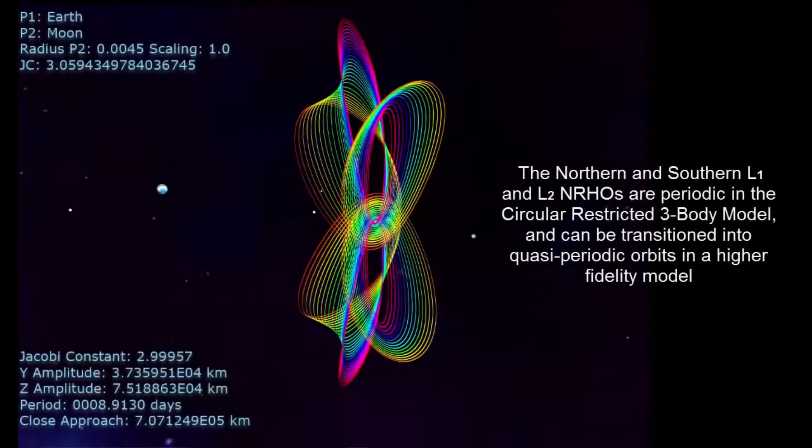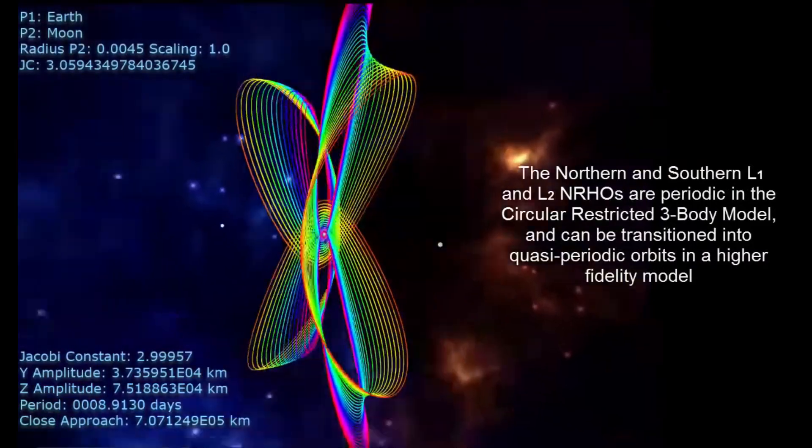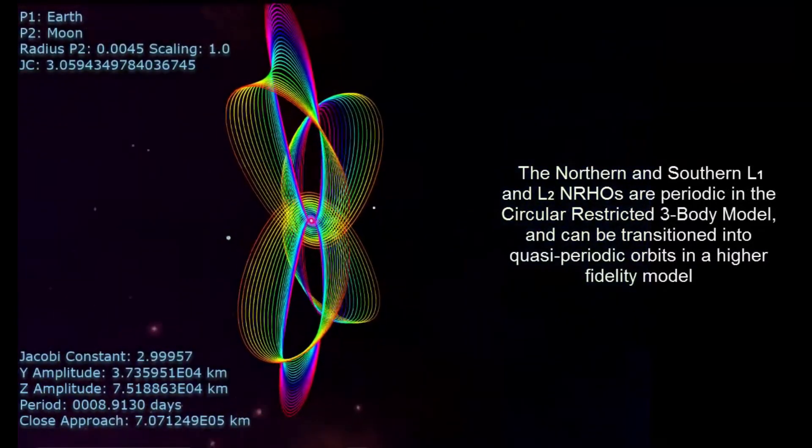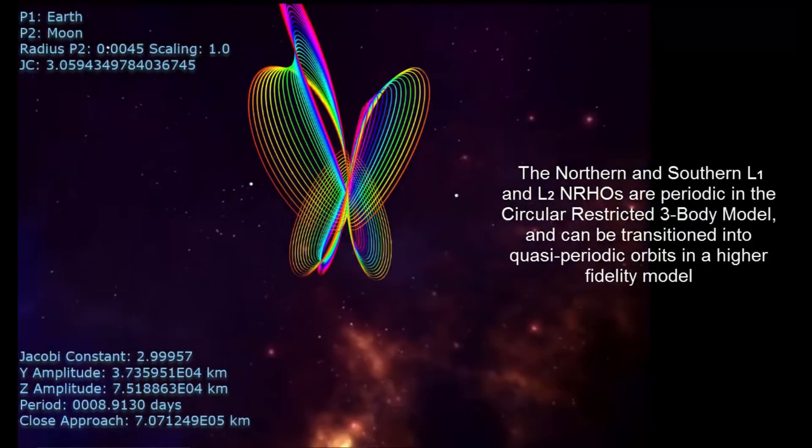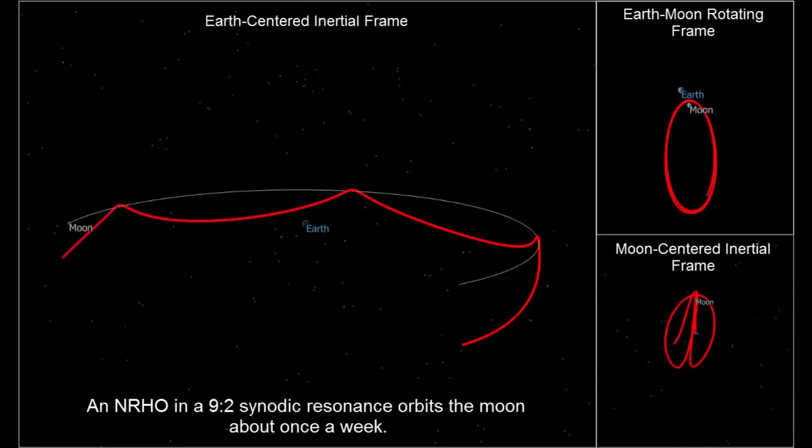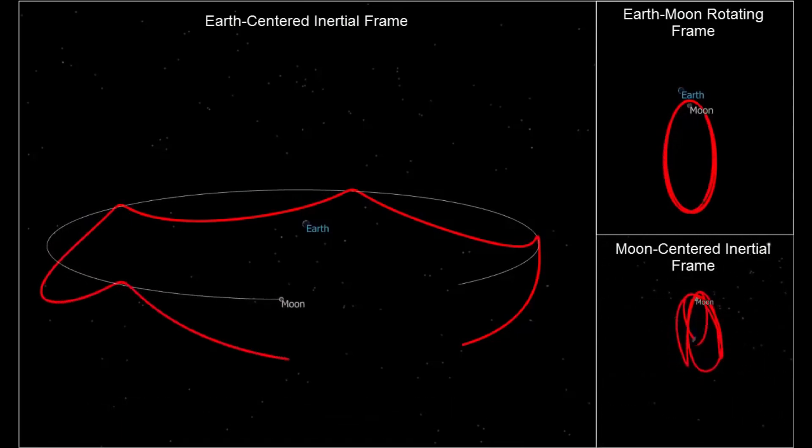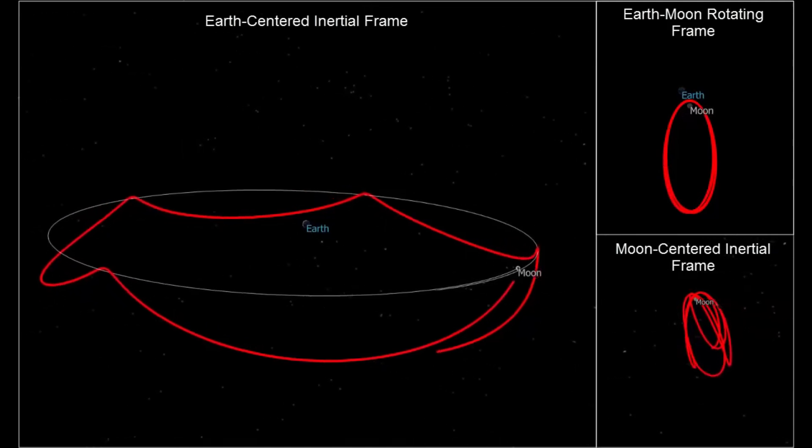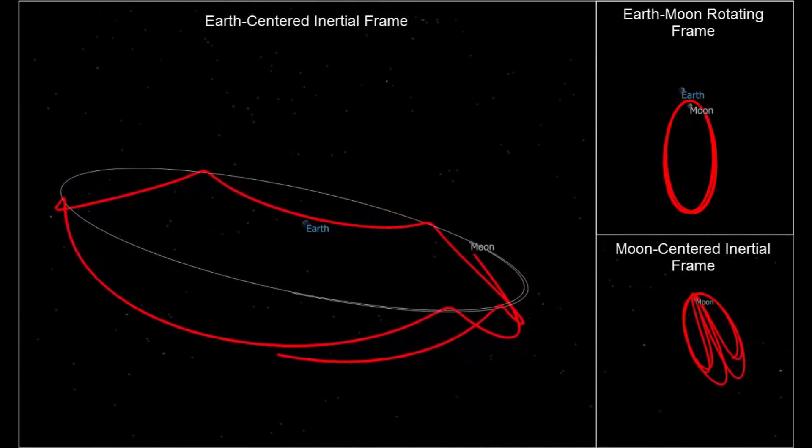Now, it should also be clear that you can have the halo orbits coming between starting between the Earth and the Moon or on the far side of the Moon. And they can have their close approach to the Moon being on the North Pole or the South Pole. These are all valid solutions. But the one specifically chosen is the Southern L2 orbit. So from the Moon's point of view, this orbit comes down to about 3,000 kilometers above the Moon's North Pole, swings around relatively quickly, and then spends most of its time, almost a week, in the South Pole region going out to about 70,000 kilometers from the Moon before swinging back.